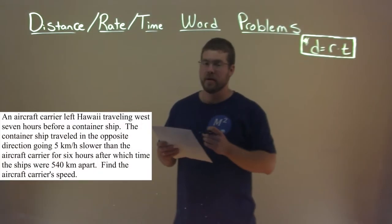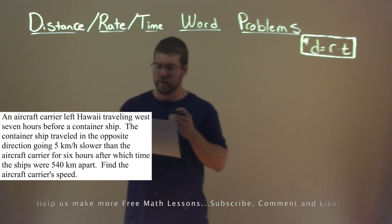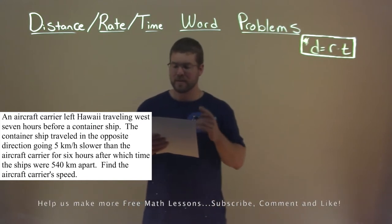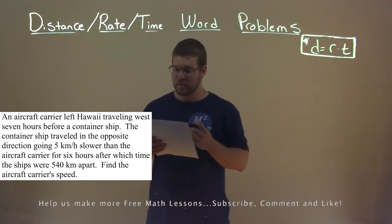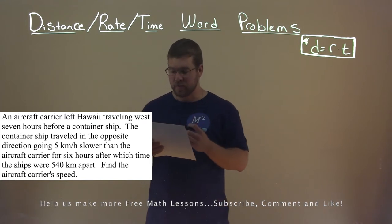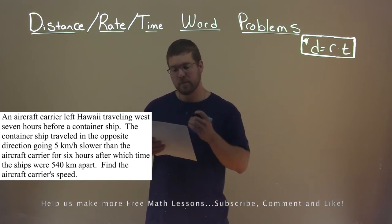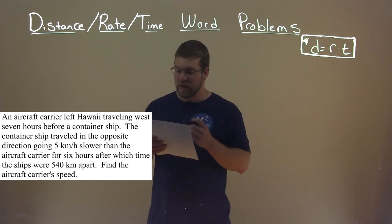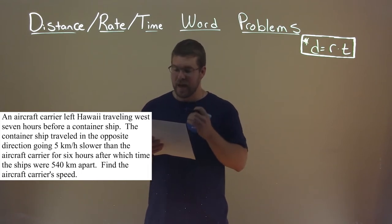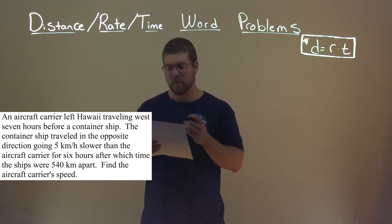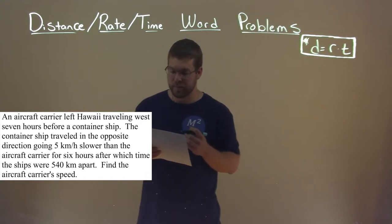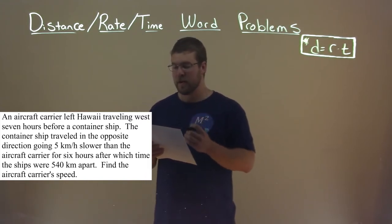I'm given this problem right here. An aircraft carrier left Hawaii traveling west seven hours before a container ship. The container ship traveled in the opposite direction going five kilometers per hour slower than the aircraft carrier for six hours, after which time the ships were 540 kilometers apart. Find the aircraft carrier's speed.